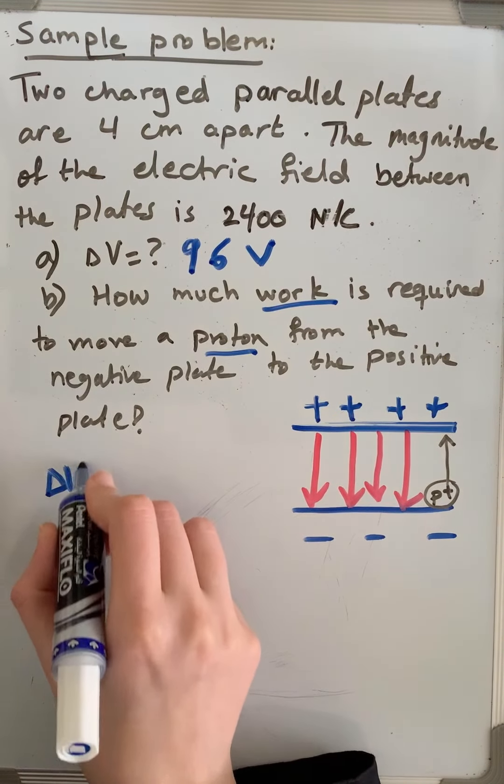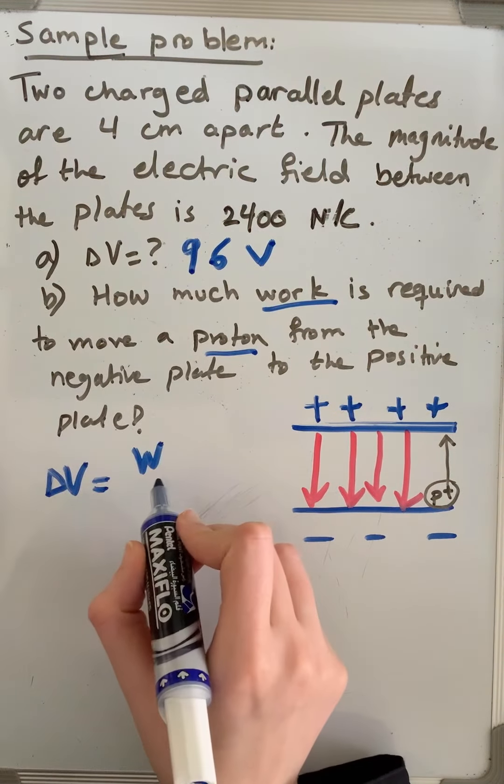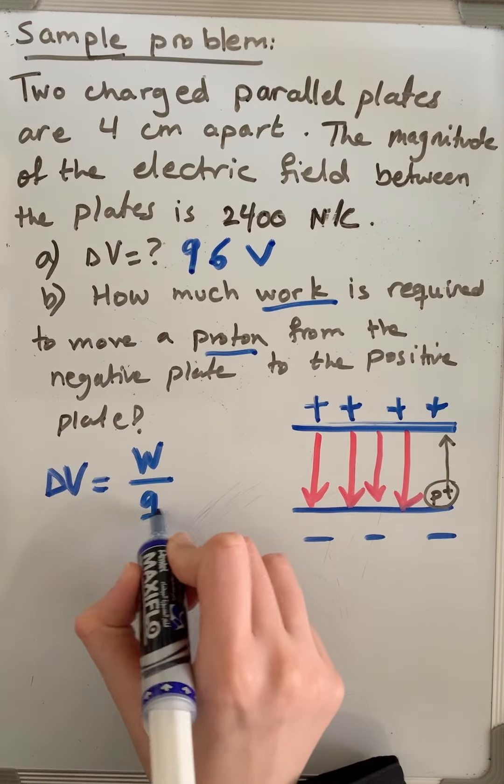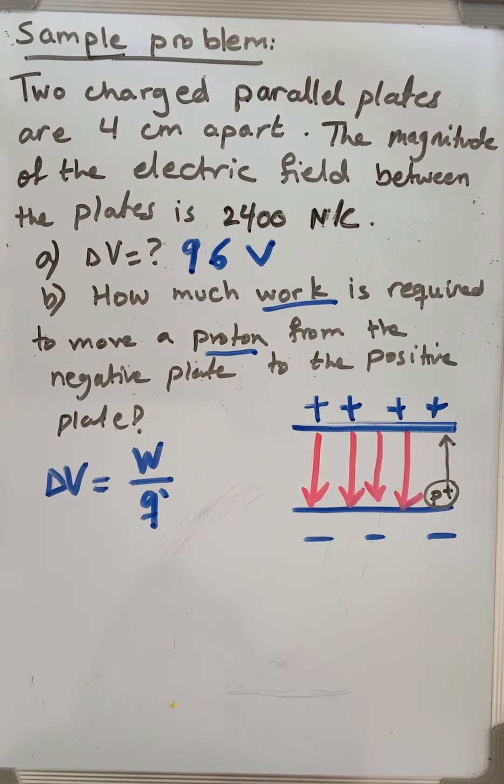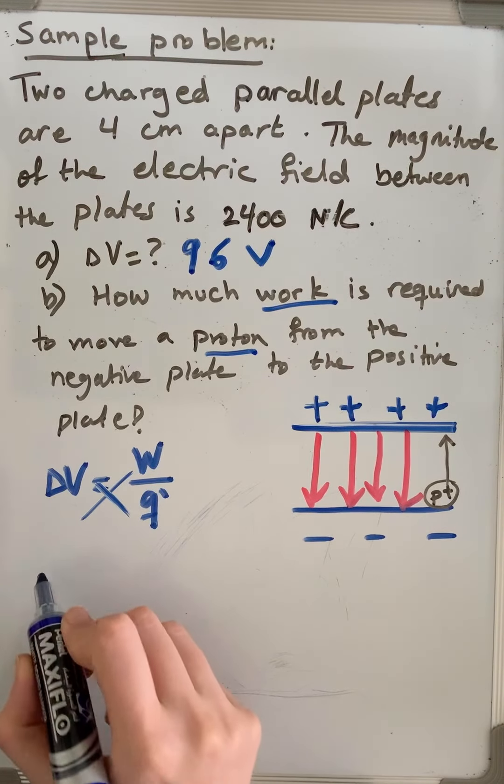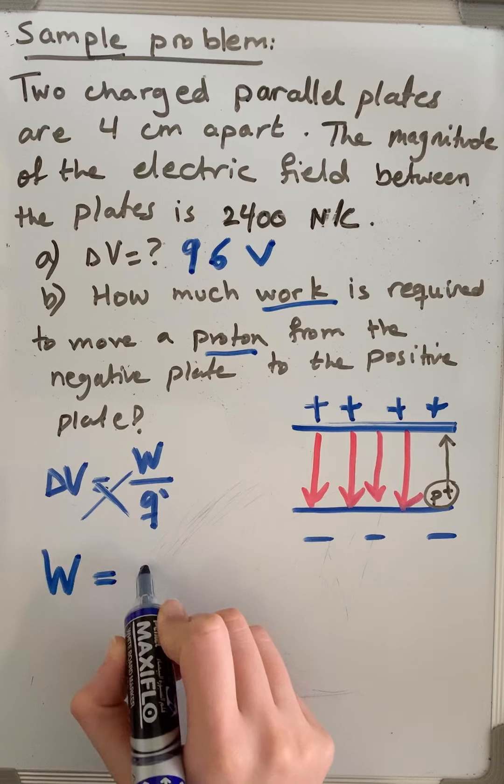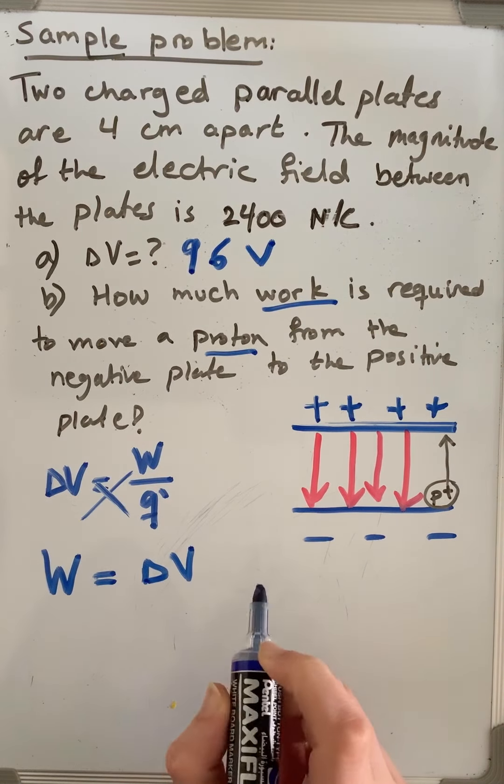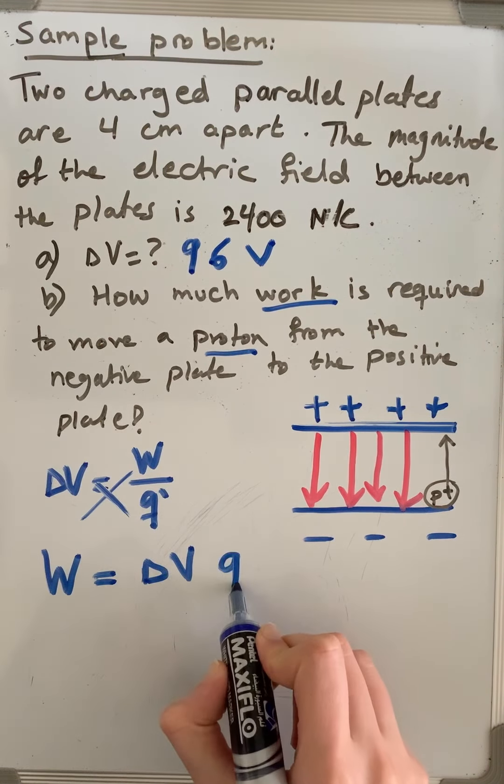The formula of delta V is work on Q prime divided by the Q prime, the test charge that work is applied to. If we arrange this equation using cross multiplication, work will be delta V multiplied by the charge Q prime.